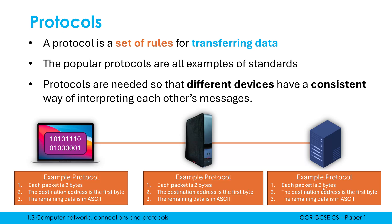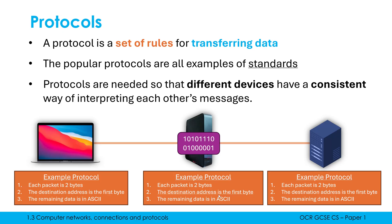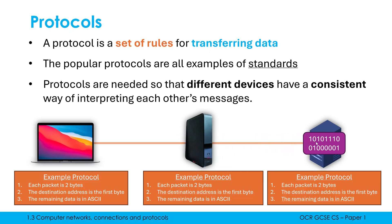If everyone understands and agrees to these rules, you can communicate and interpret what the binary means. The second rule is most relevant for the router — it looks at the destination address in the first byte, which enables it to pass the packet to the server. The server doesn't care about the first byte, but it cares that the remaining data is in ASCII, meaning it can convert the binary to ASCII and see that the message is 'A'. This only works because you have a protocol that is widely agreed upon.